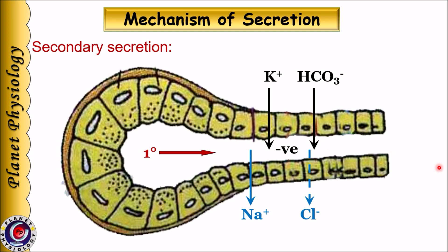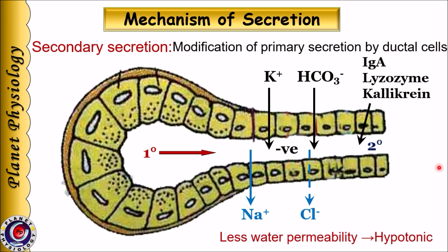Some of these bicarbonate ions are exchanged with chloride, and some are actively secreted into the lumen. Thus the concentration of sodium and chloride in saliva falls to very low levels, and potassium and bicarbonate increase. Ductal cells also secrete IgA, lysozyme, and kallikrein. These cells are relatively less permeable to water, and hence the final saliva that enters the oral cavity is hypotonic. This modified secretion is called secondary secretion.